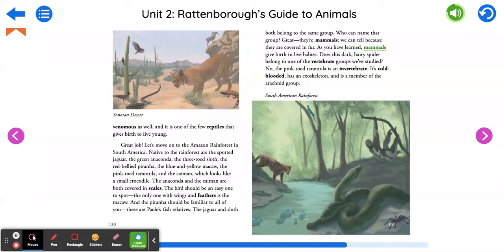We can tell because they are covered in fur. As you have learned, mammals give birth to live babies. Does this dark hairy spider belong to one of the vertebrate groups we've studied? No, the pink-toed tarantula is an invertebrate. It's cold-blooded, has an exoskeleton, and is a member of the arachnid group.